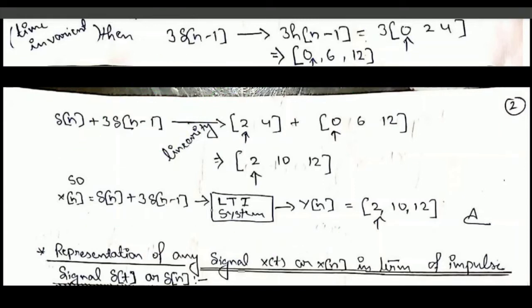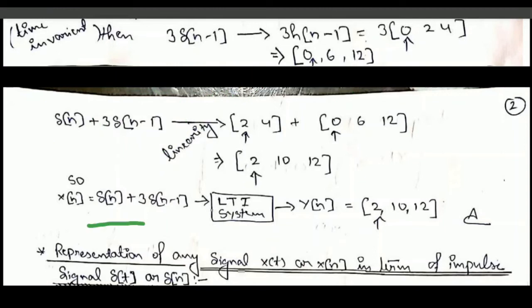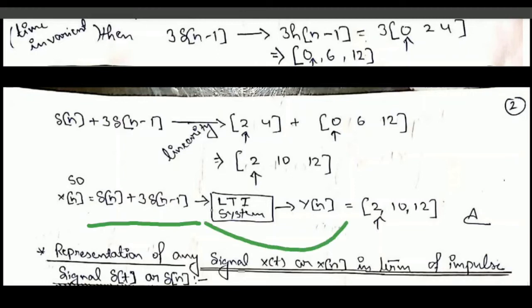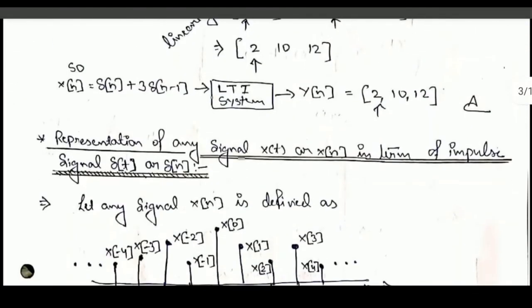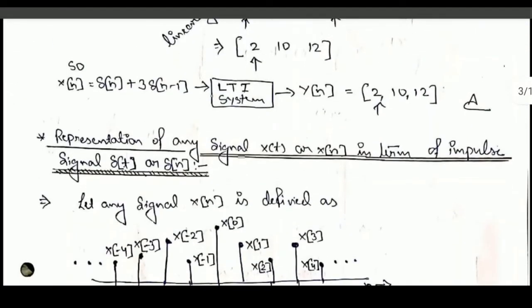By superposition, combining the two responses: 0+2 = 2, 4+6 = 10, and 0+12 = 12. Therefore, the answer for the given system is: if the input is δ[n] + 3δ[n−1], the output is {2, 10, 12}.